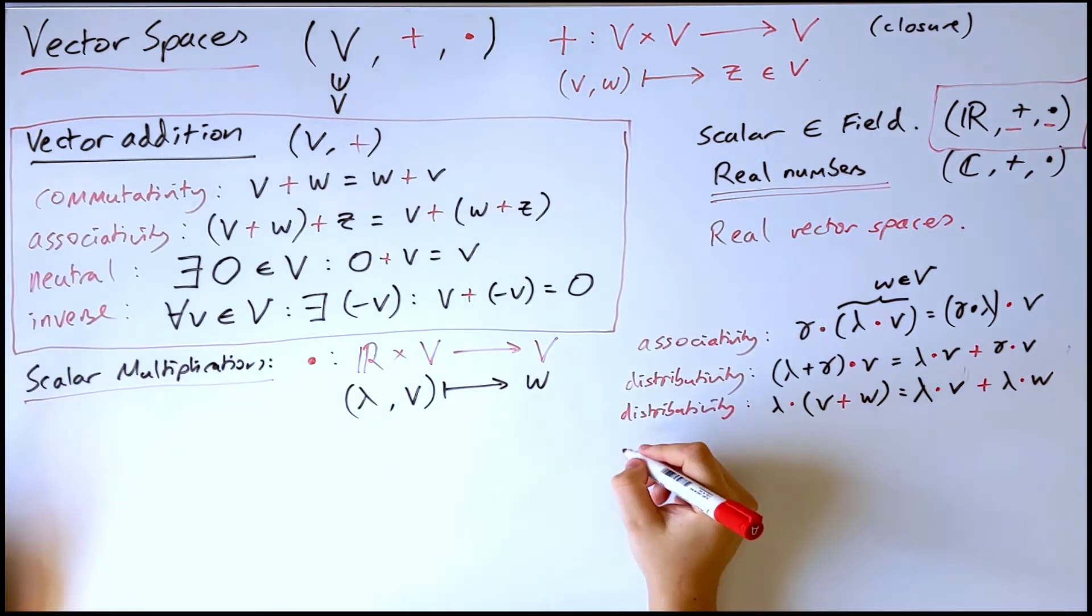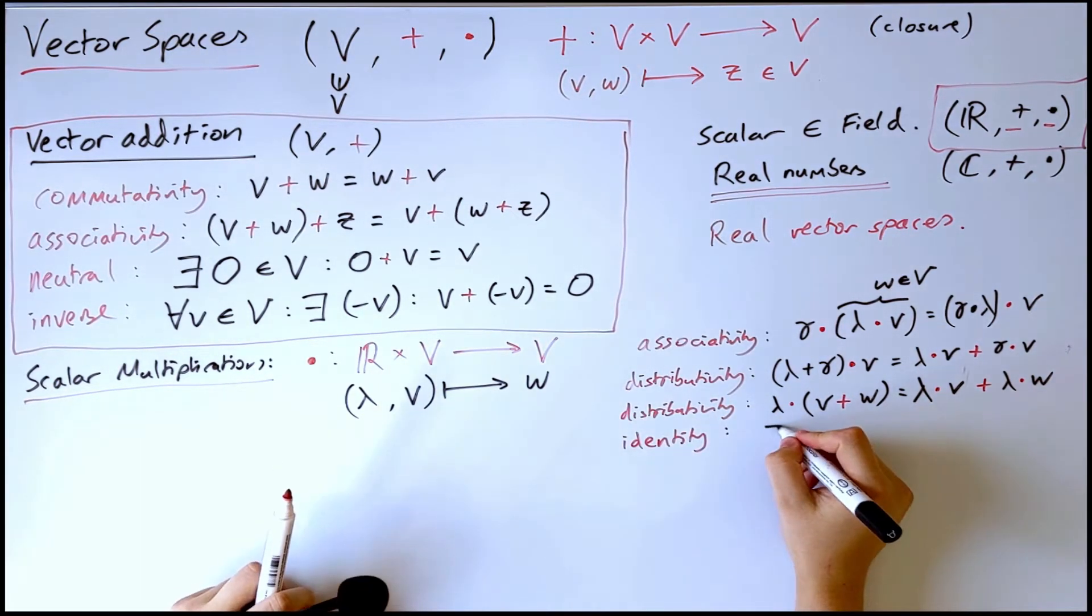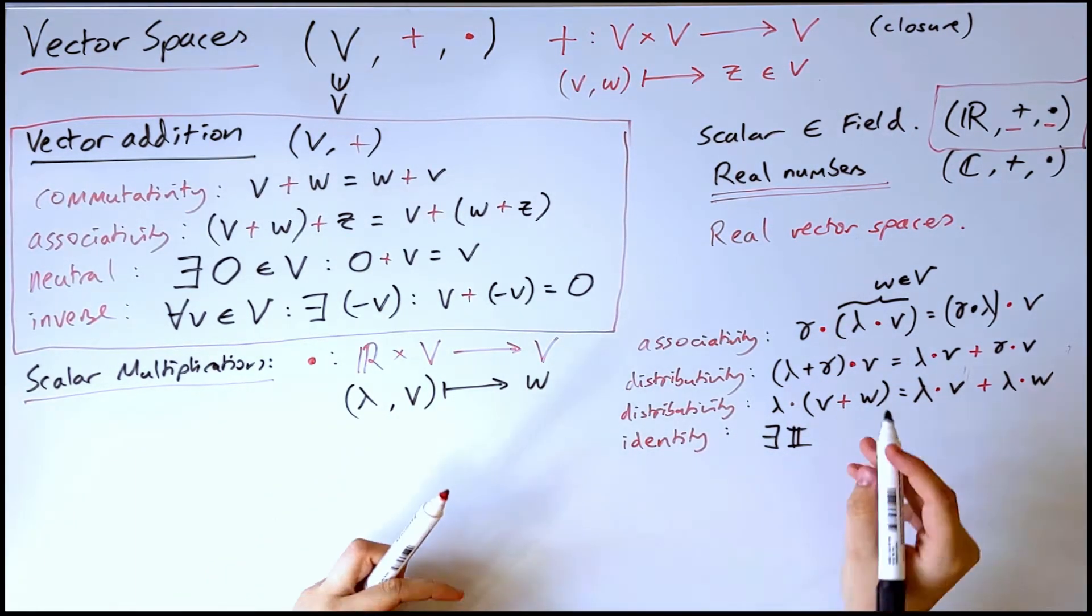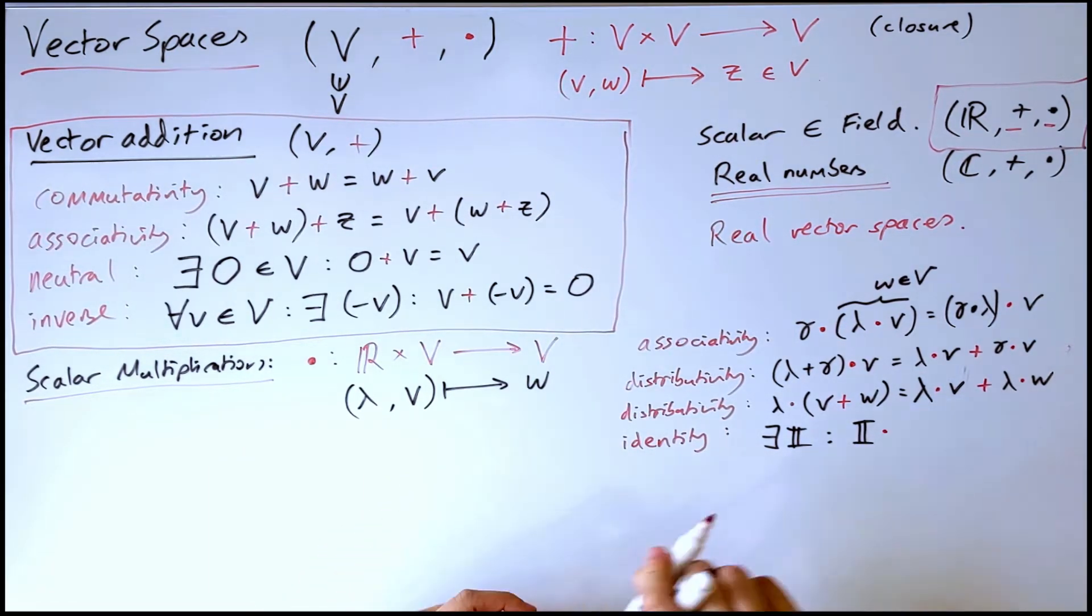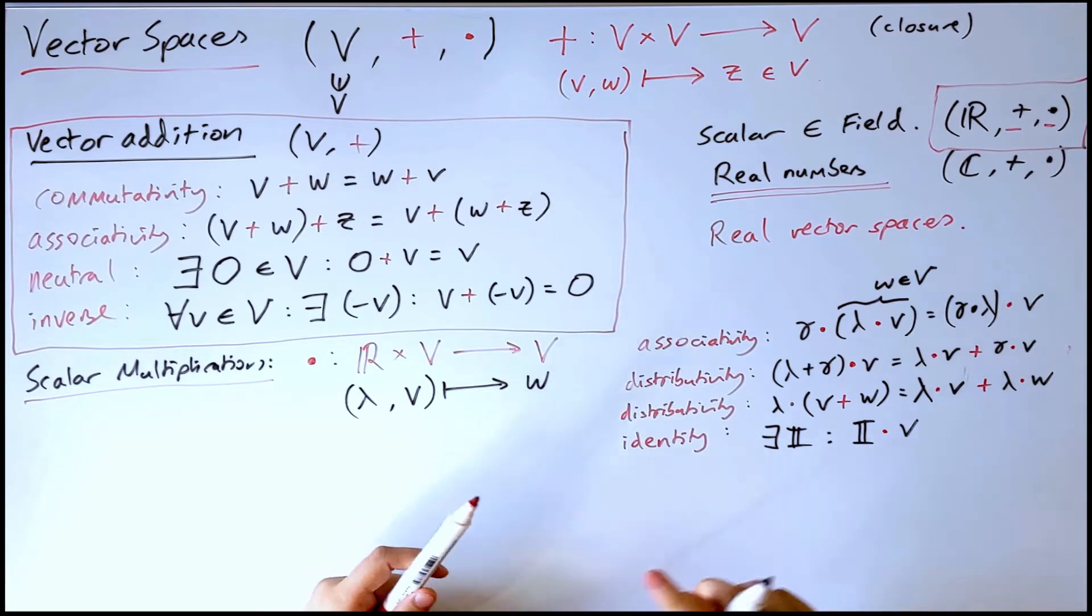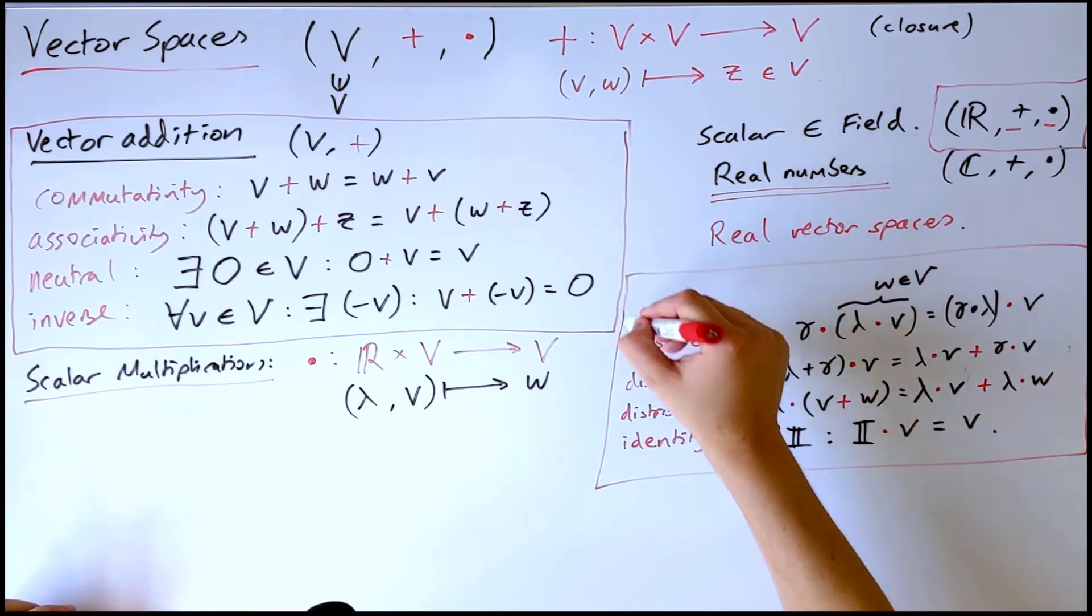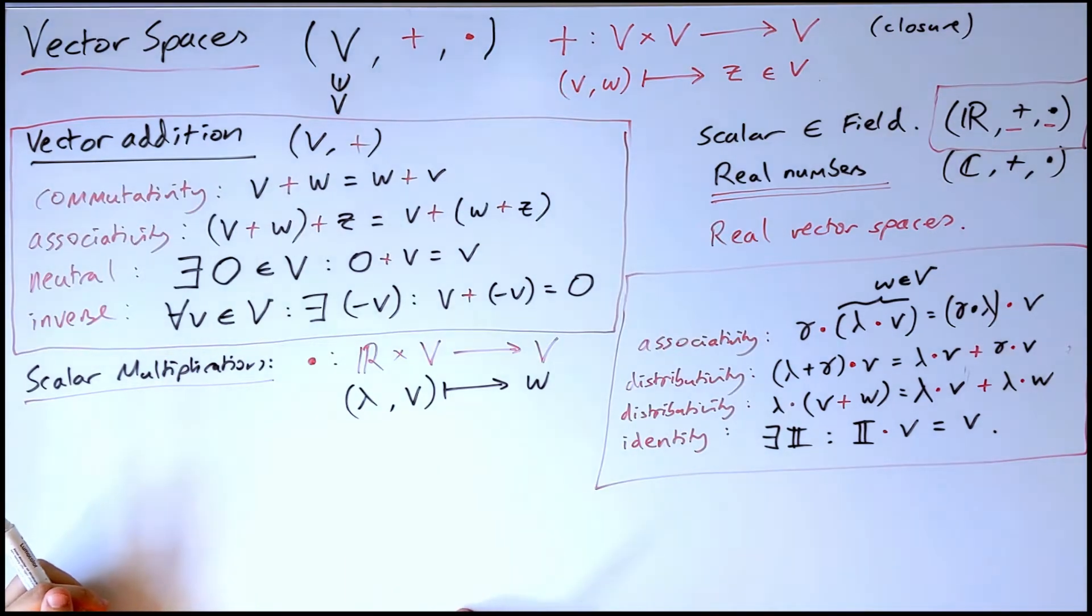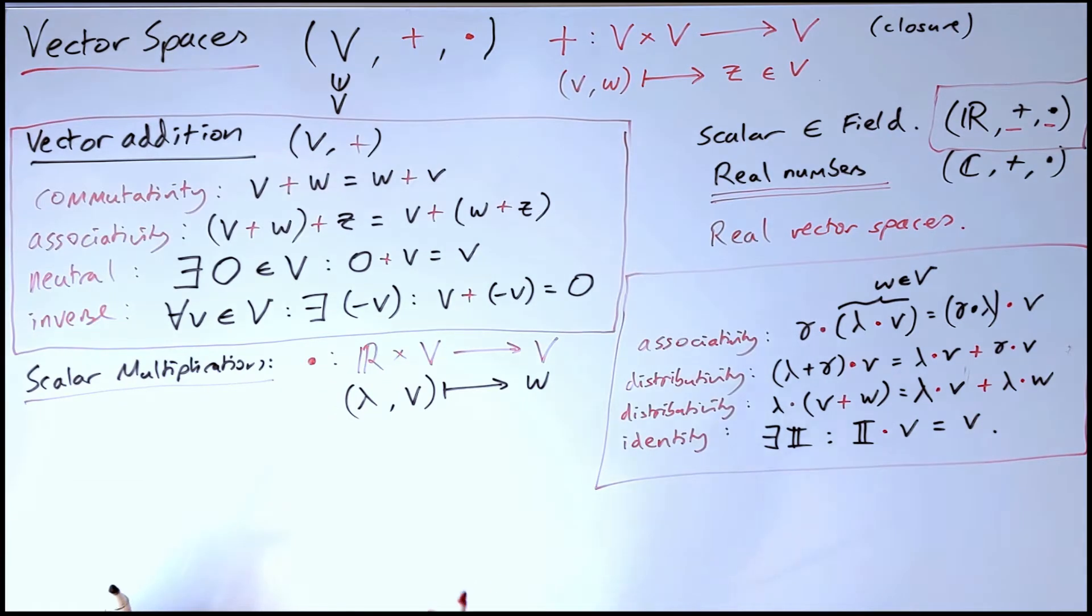And then finally, we have that there exists an identity, an identity scalar, which I'll call i, such that when you scalar multiply i with any vector, you are just returned that vector. So these are the rules that scalar multiplication must follow, and then taken with the rules that vector addition must follow. Any set that you can show satisfies both of these rules for all its elements forms a vector space.